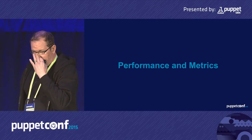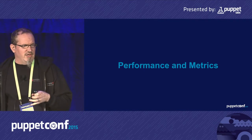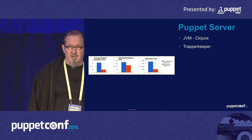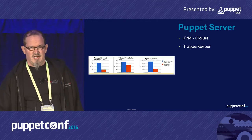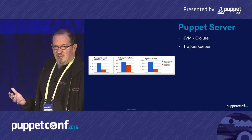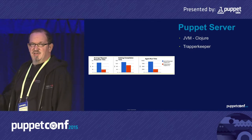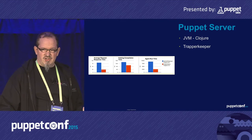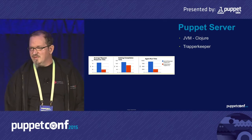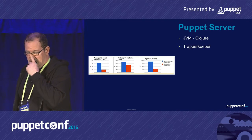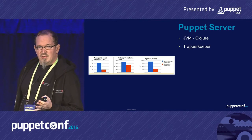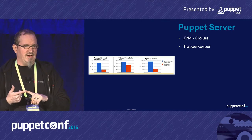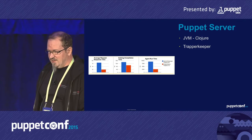The first thing is performance and metrics. This is not something really new; it was announced last year at PuppetConf and the Puppet server itself was already available when PuppetConf started. Old-timers might know there was a Ruby on Rails application and you had to configure Nginx or Apache with Passenger to get performance. Now we have the JVM-based Puppet server with Trapperkeeper included, which allows us to easily add more compile capacity.